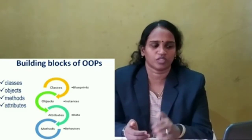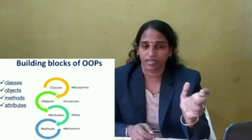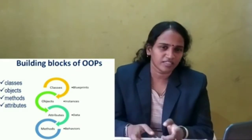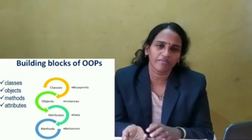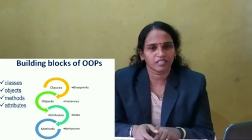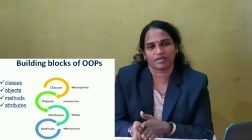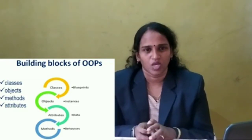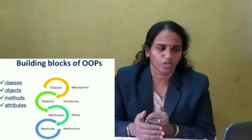Next are attributes — attributes means data. For a car, the data includes mirror, engine, wheel, etc. That is called attributes. Next are behaviors or methods. For a car, the methods are: start, stop, and driving — three actions. So this is called a method. Object oriented programming is built on classes, objects, methods, and attributes.